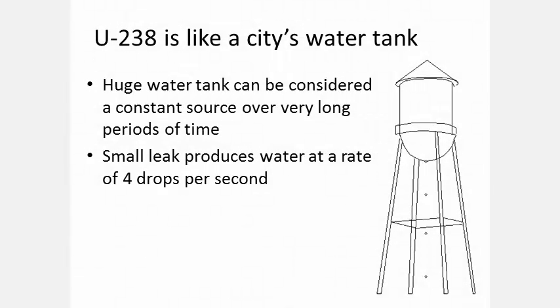Uranium-238 has an extremely long half-life, so it's like a city's huge water tank with a very small hole at the bottom, leaking at the rate of four drops per second. Because the water tank is so large, we can consider the drip rate to be constant over a very long period of time.